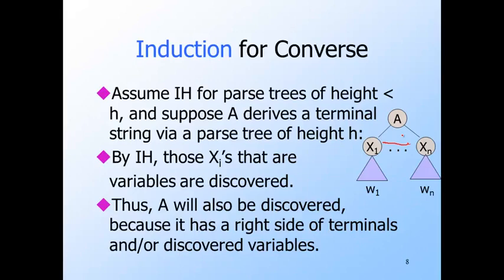Moreover, one of these variables is discovered last. At the round where the last of the variable Ai's is discovered, we must surely do another round since the set of discovered variables just changed. On the next round, A will be discovered because it has a production — A goes to X1 through Xn — whose body consists only of terminals and discovered variables.